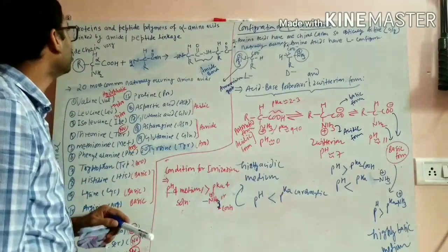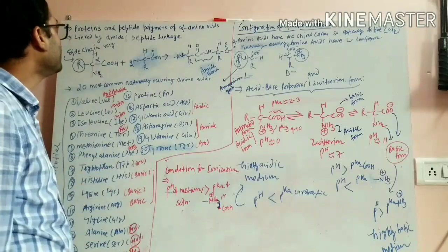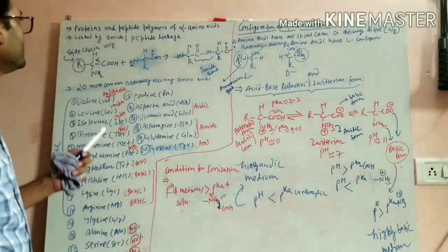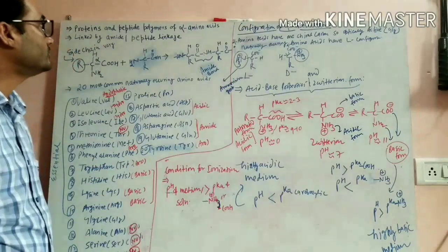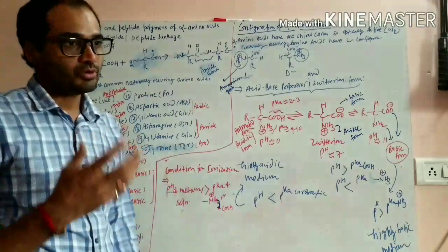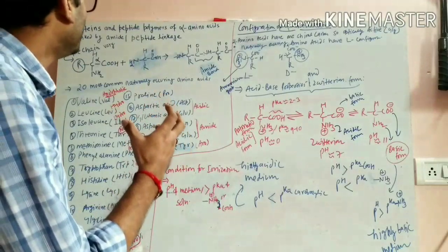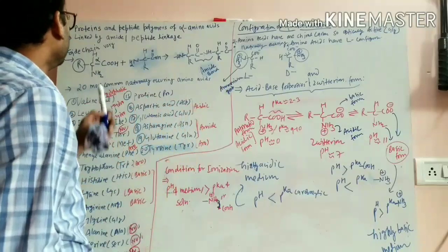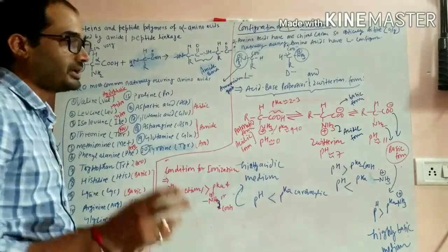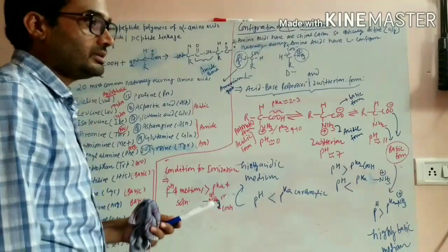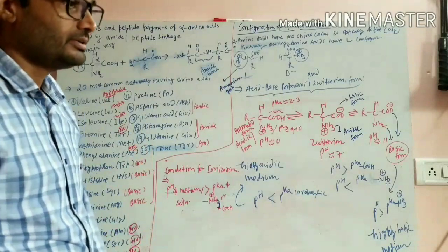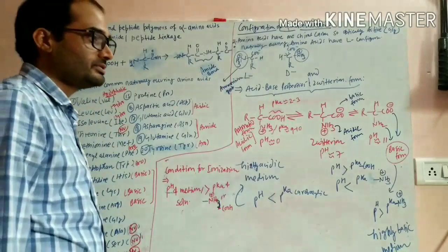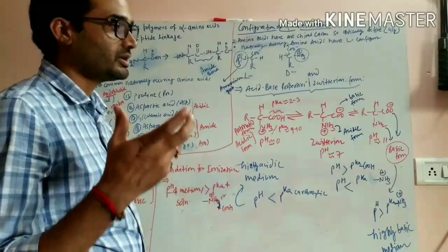In this lecture, we are going to discuss about proteins, peptides, and amino acids. Proteins and peptides are polymers of alpha amino acids, and in these polymers, the alpha amino acids are linked together by an amide linkage or a peptide linkage. The repeating units in a peptide are called amino acid residues, and proteins are polypeptides made up of more than 100 amino acids.